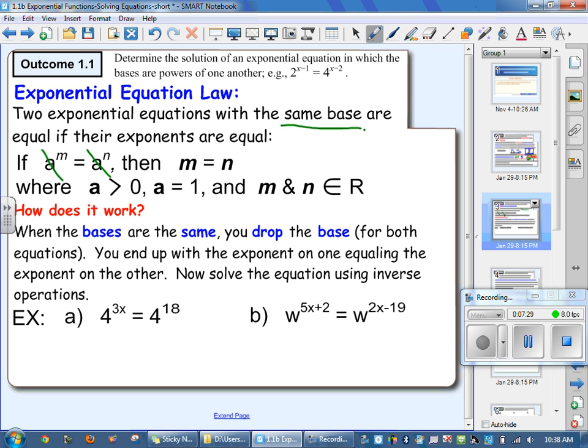And M and N can be any real number. So they can be a fraction, a decimal, they can be any number, a square root. It really doesn't matter. So how does it work? When the bases are the same, you drop your bases, and then you just end up with the exponents on one equal to the exponents on the other. So now you solve them using inverse operations like normal equation solving.